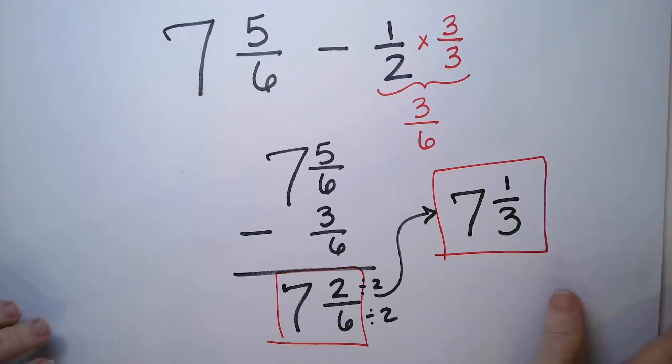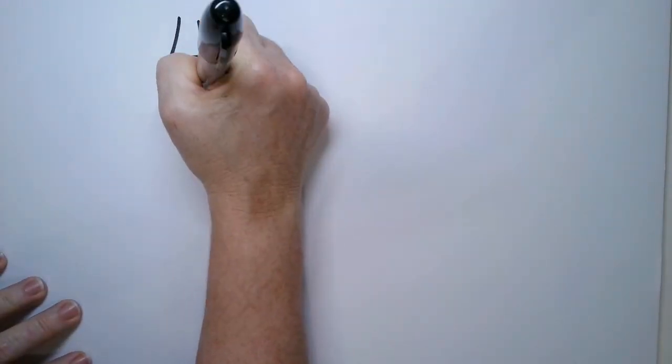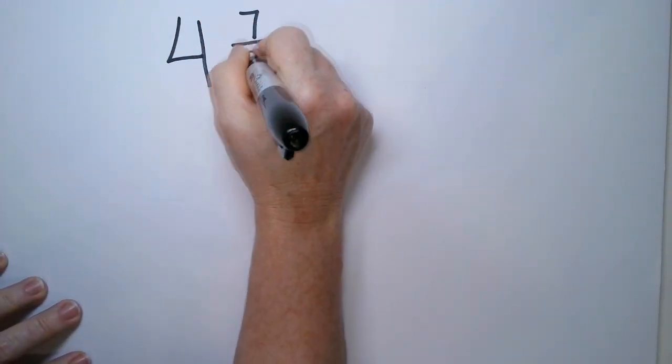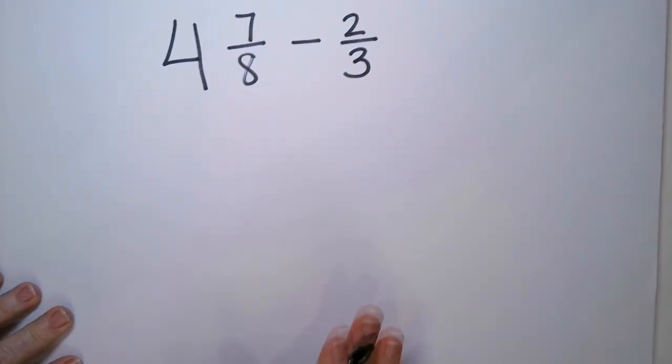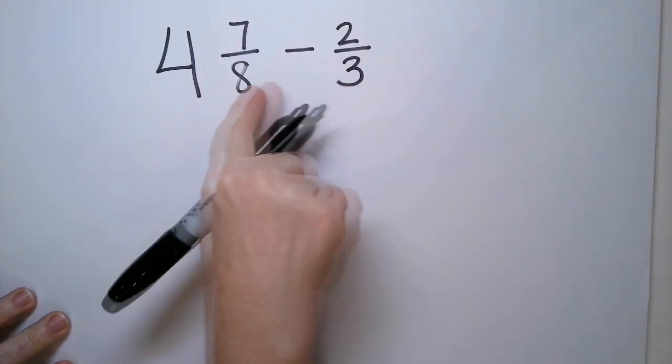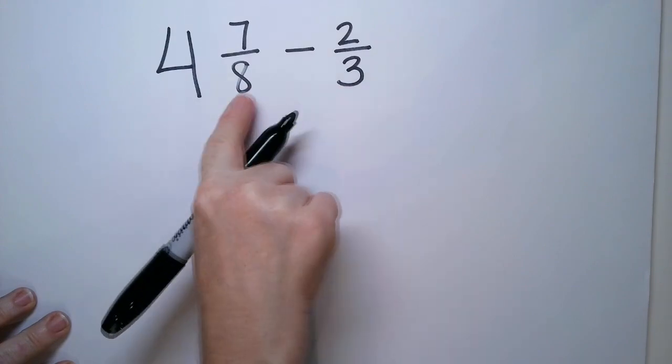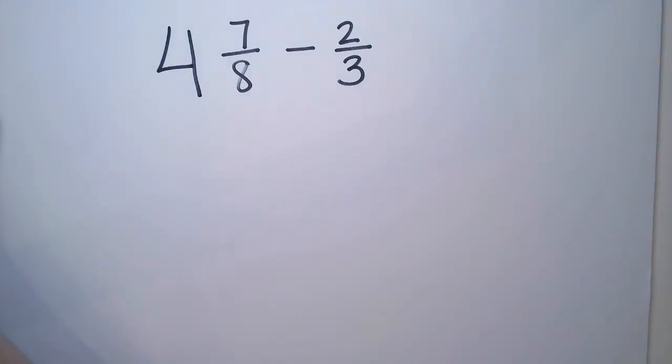Let's do another problem so you're comfortable. I have four and seven eighths minus two thirds. So I'm going to have to scale both of these because eight and three, they don't have a greatest common factor.